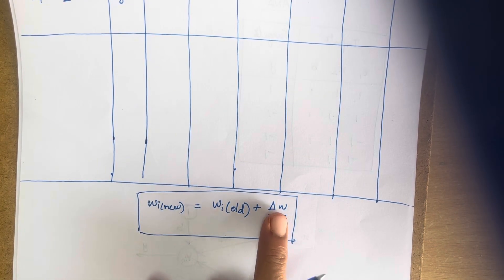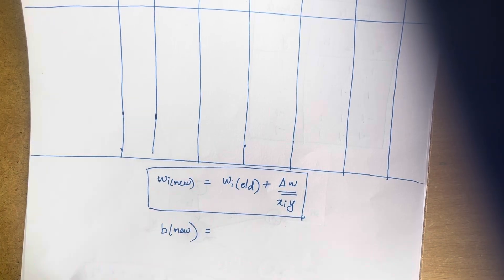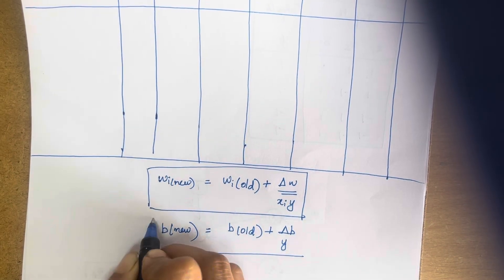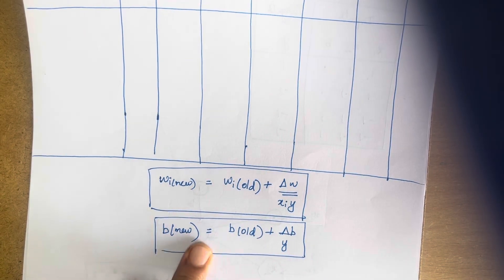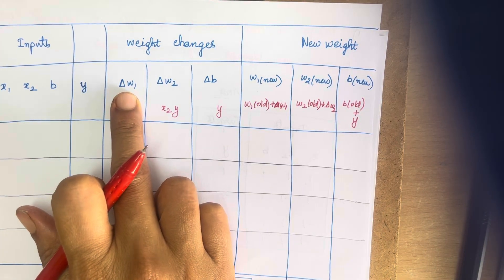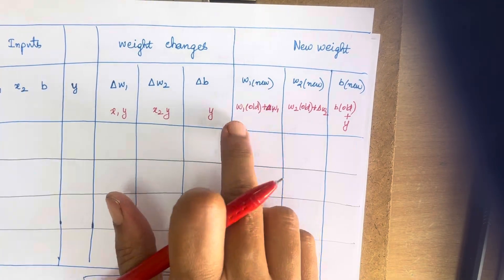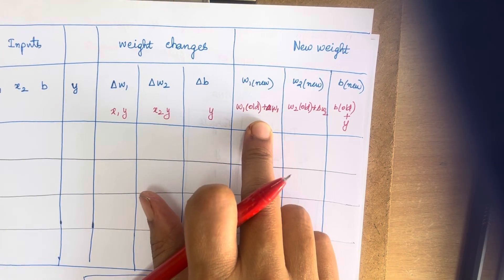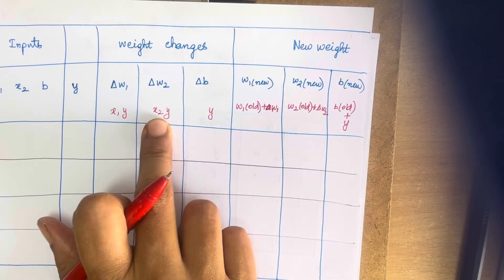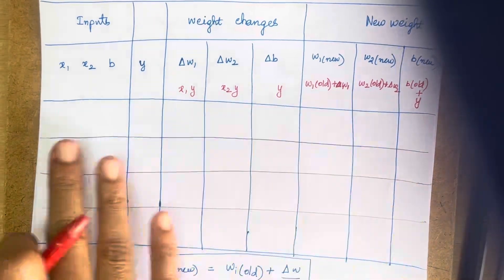New weights equal old weights plus change in weights, which is Xi into Y. Likewise, the new bias weight equals old bias weight plus delta_B, where delta_B equals Y. We write: delta_W1 = X1*Y, delta_W2 = X2*Y, delta_B = Y. Then W1_new = W1_old + delta_W1, W2_new = W2_old + delta_W2, and B_new = B_old + delta_B.